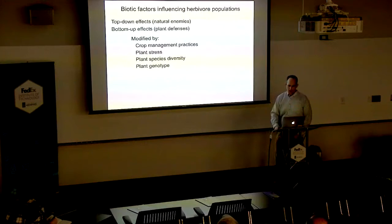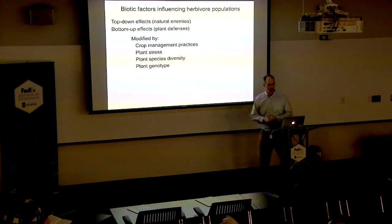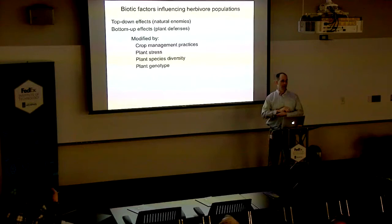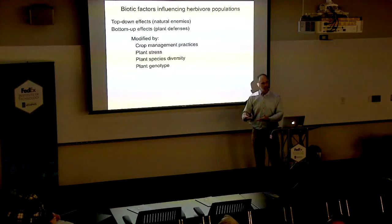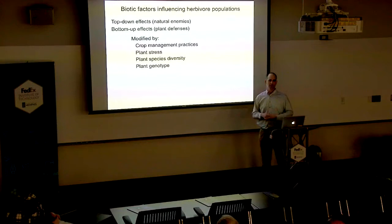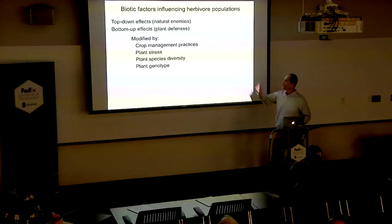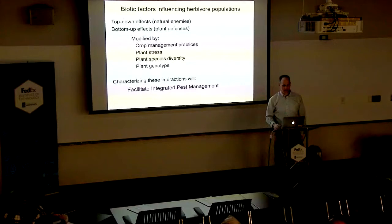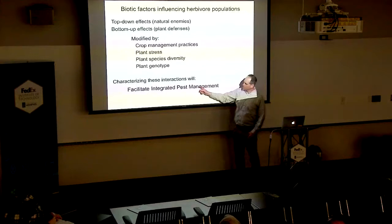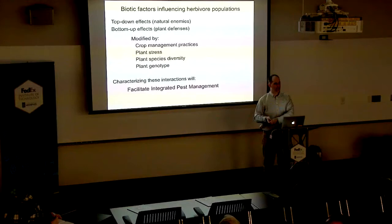If I was to tie together all the work that my students and postdocs do, we're trying to understand the biotic factors that influence herbivore populations. Some of these are top-down effects — natural enemies doing things that limit herbivore populations. Some are bottom-up effects, where the plant is driving the interaction. Crop management practices that stress various types of diversity, whether species or genotypic diversity, can alter how effective those top-down or bottom-up effects are. My strong belief is that if we better understand these interactions, we can implement integrated pest management a whole lot easier.